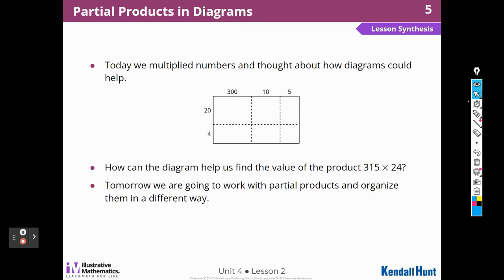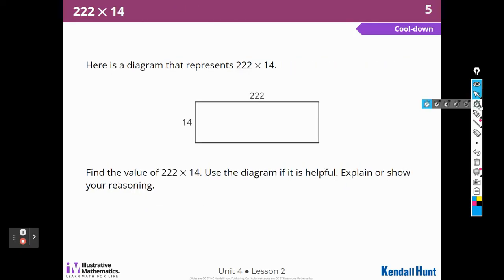Today we multiplied numbers and thought about how diagrams can help. How can this diagram help us to find the product of 315 times 24? Well, we've talked about that. Tomorrow we're going to work on more partial products and organize them in a different way. Here's our cool down. So here's a diagram that represents 222 times 14. Find the value of 222 times 14. Use the diagram if it is helpful. Explain or show your reasoning.